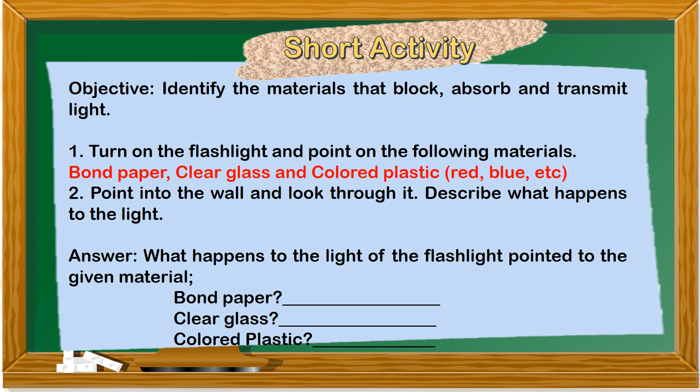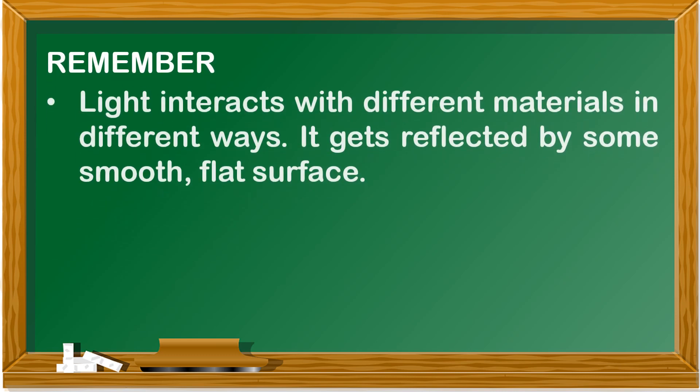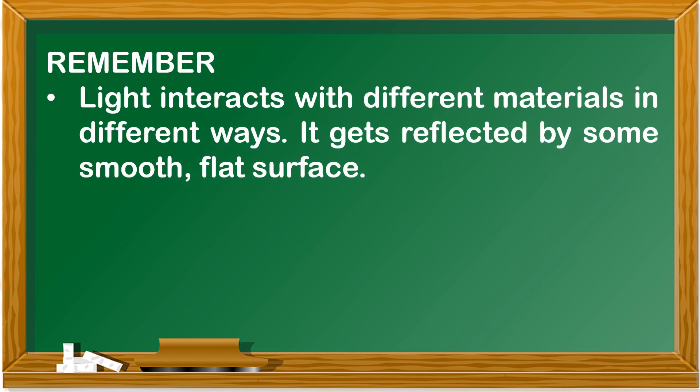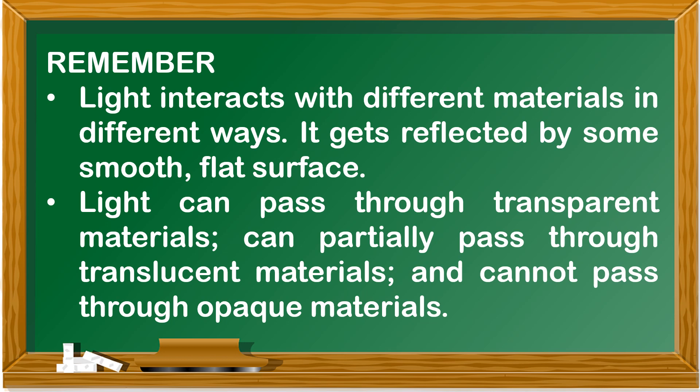And now, you are ready for a short activity. Please do the following procedures and answer the questions that follow on paper. Remember, light interacts with different materials in different ways. It gets reflected by some smooth flat surfaces. Light can pass through transparent materials, partially pass through translucent materials, and cannot pass through opaque materials.